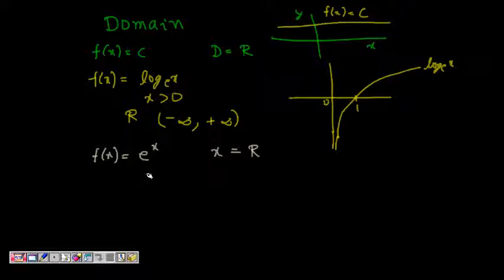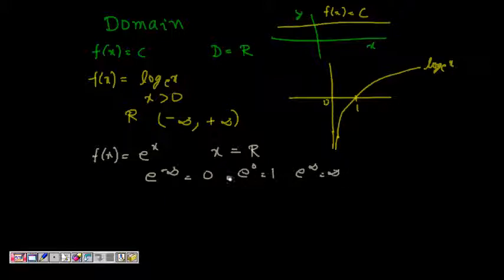We see that e to the power of minus infinity is 0, e to the power of 0 is 1, and e to the power of infinity is infinity. So the range of eˣ is (0, +∞).